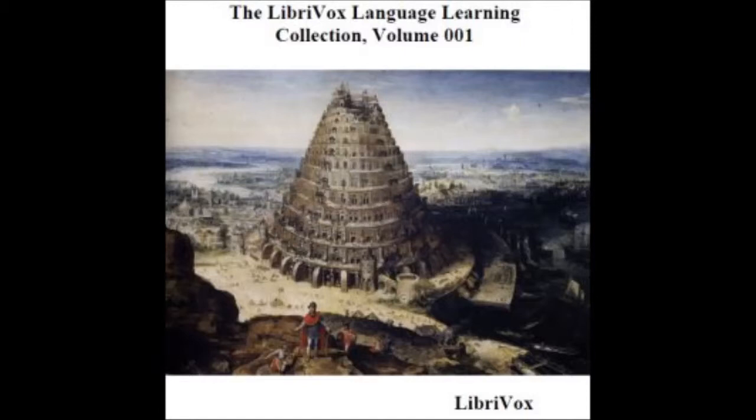Of Vowels. A. A has three sounds: the slender, open, and broad. A slender is found in most words, as face, main, and in words ending in -ation, as creation, salvation, generation. The A slender is the proper English A, called very justly by Urpenius in his Arabic grammar A-Anglicum-cum-E-mistum, as having a middle sound between the open A and the E.